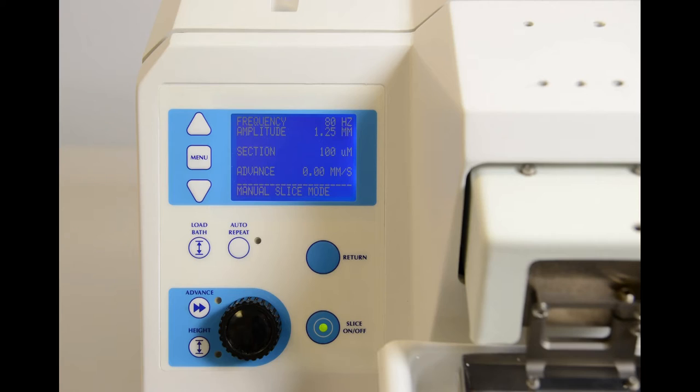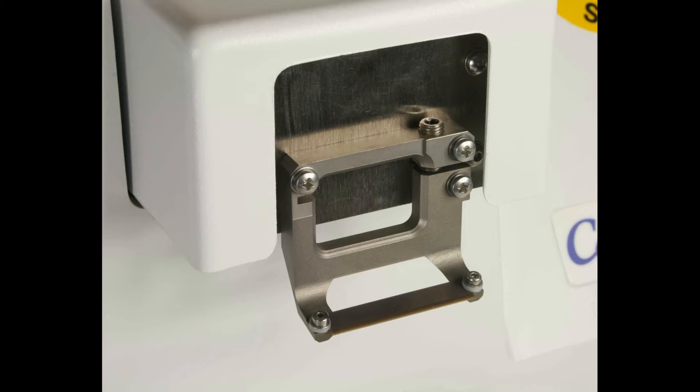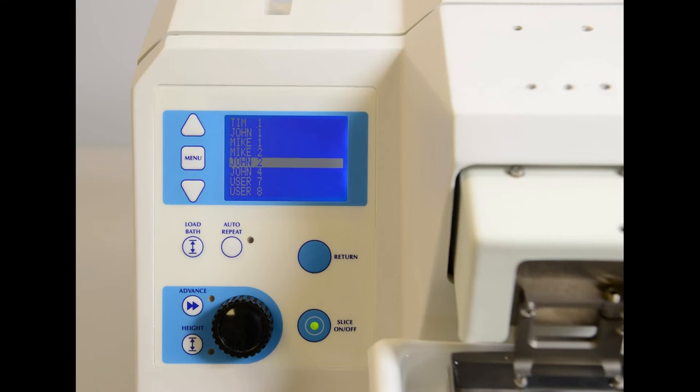The horizontal vibratory amplitude can be adjusted between 0.5 and 2.5 millimeters with a vibration frequency between 50 and 120 hertz. The instrument has a vertical Z-axis deflection error of less than 1 micron. The blade advance speed is variable up to 4 millimeters per second.